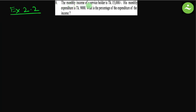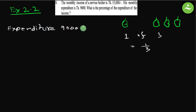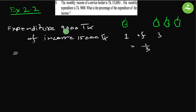Question number 8. The monthly income of a service holder is 15,000 taka. His monthly expenditure is 9,000 taka. What is the percentage of the expenditure of the income? Remembering the mango analogy — one mango of three mangoes means one by three. Similarly, expenditure of income: expenditure 9,000 taka of income 15,000 taka will be 9,000 by 15,000.